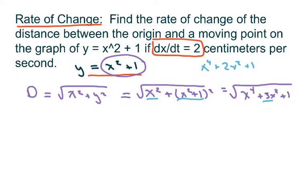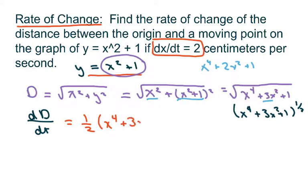So now we're going to take the derivative of the distance with respect to t. I can write this as x to the fourth plus 3x squared plus 1 to the 1 half. So I'm going to use my chain rule, and I get 1 half times x to the fourth plus 3x squared plus 1 to the negative 1 half times the derivative of your inner function, which is 4x cubed plus 6x.